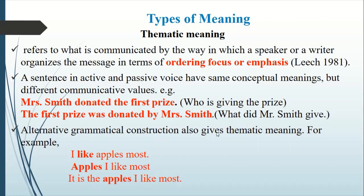Alternative grammatical constructions also give thematic meanings. For example: 'I like apples most,' 'Apples I like most,' and 'It is the apples I like most.' In the first example, emphasis is on liking; in the second, emphasis is on apples; and in the third, emphasis is on both apples and liking. This is the communicative value of these sentences, although the conceptual meanings of all three are the same.